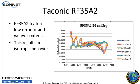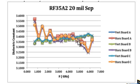Not all materials exhibit anisotropy, though. Taconic RF35A2 is a special material with low ceramic and low fiberglass weave content. The structural and loss properties might not be as good as some other materials, but since those are the primary sources of anisotropy, it is a much more isotropic material to work with.